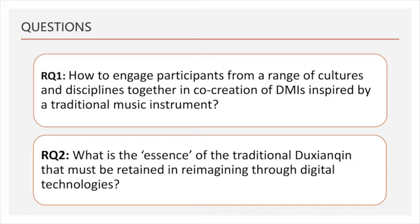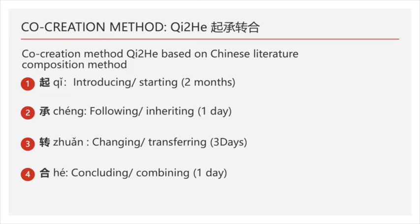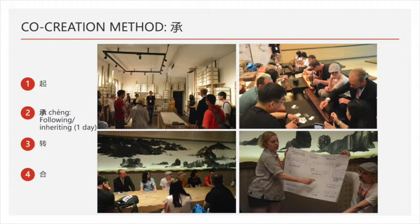To do this, we brought together 24 people — eight from the UK and 16 from China. We structured our co-creation activities into four parts. The first stage, introducing, was two months of online discussions and preparations through WeChat, a very popular Chinese social media platform. The next stage focused on immersion in the traditional cultures of both the Du Chen Qing and guqin.